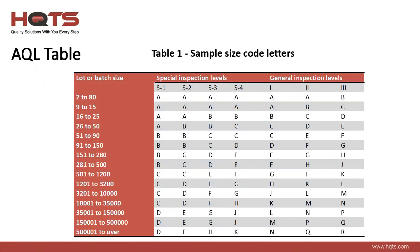Now we're going to look at the tables and how these are used. The most common AQL standard for the consumer goods industry was developed by the American National Standards Institute, ANSI, and the American Society for Quality. The AQL table is used as a fundamental tool for preparing a sampling plan for random inspections of products. The AQL table makes it easy for the buyer, manufacturer, and quality control provider to come together in agreement on quality inspection standards. What you're seeing here is Table 1, which helps us to define the sample size code letters.